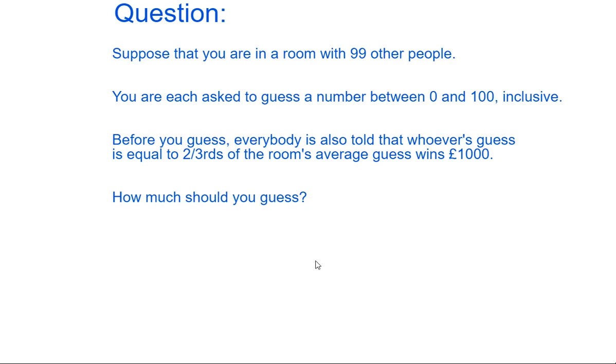So everybody in the room is asked to guess a number between 0 and 100, inclusive of both 0 and 100, so those can be responses as well. And before you guess, everybody in the room is told that whoever's guess is equal to two-thirds of the room's average wins £1,000.